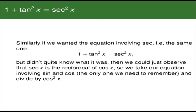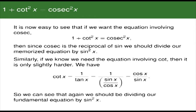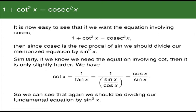If you want the equation involving sec, it's the same one, and you go through a similar procedure — observing that sec x is the reciprocal of cos x, and dividing our sine-cosine equation by cos squared x. To get the equation involving cosec — that is 1 plus cot squared x equals cosec squared x — since cosec is the reciprocal of sine, we divide our memorized equation by sine squared x. Similarly, for cot, since cot x equals cos x over sine x, we again divide by sine squared x. Those are the two ways of getting 1 plus cot squared x equals cosec squared x.